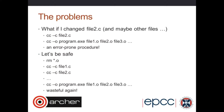If I change file2.c, I have to remember to run cc -c file2.c to recompile it and then link. That's error-prone — maybe I changed file3 as well, so now I have an executable that doesn't correspond to my source files. Or I might make a typo. You could say: let's be safe and every time remove all .o files and recompile them all, but that's wasteful again.